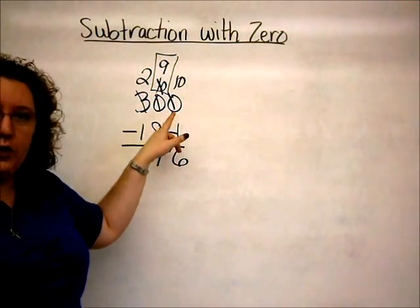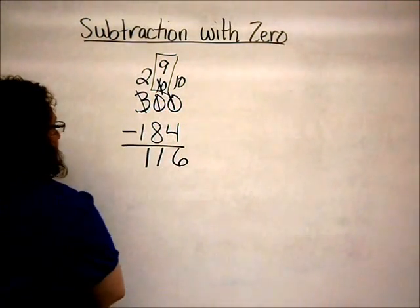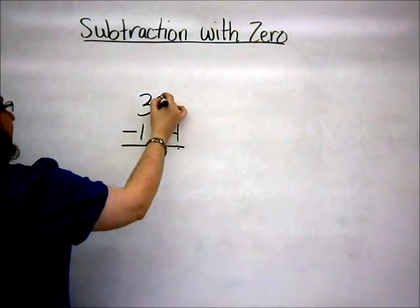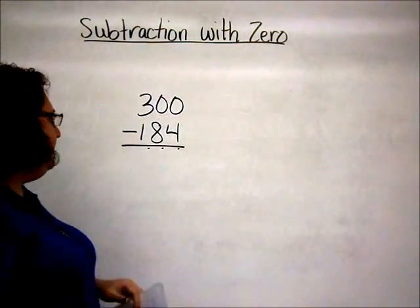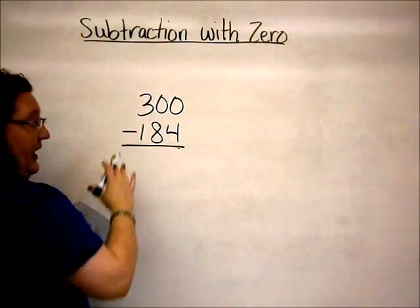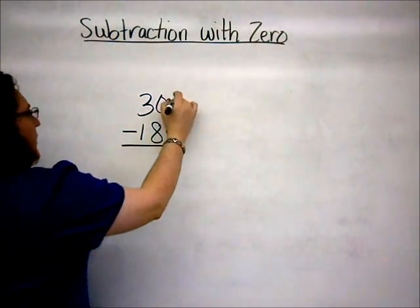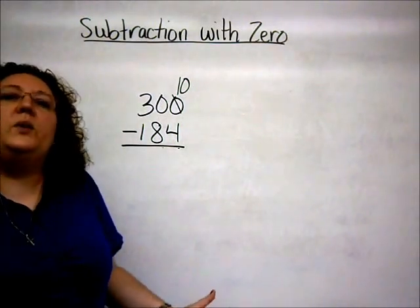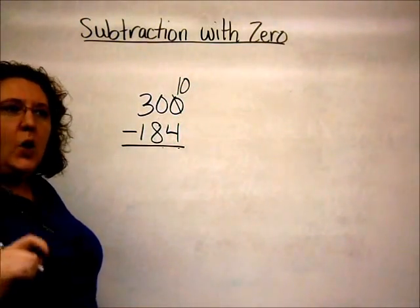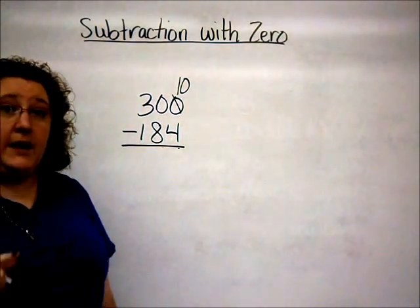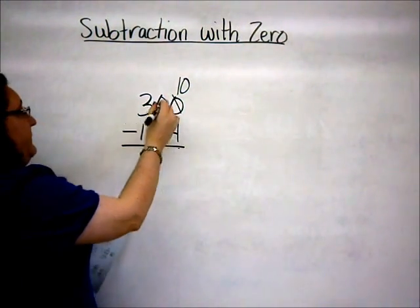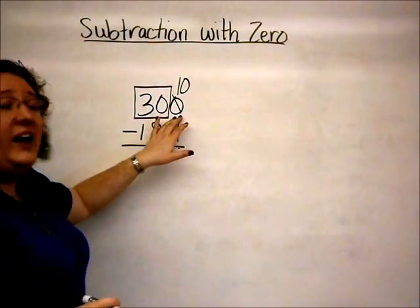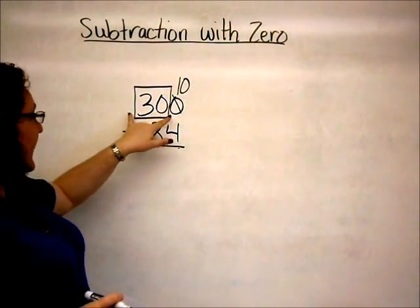Now let's take the same problem and use what we call the box method. And just as this implies, we end up making a box. In looking at the problem, we again start in the ones place and realize that we cannot subtract. Most students know that that zero is going to turn into a ten. It's a matter of where we get it from. In the box method, we continue until we hit the number that we can borrow from, which in this case is the three. And we put a box from that three all the way to the numbers in front of where we are regrouping, which in this case gives us thirty.